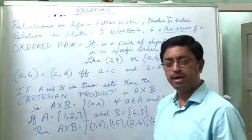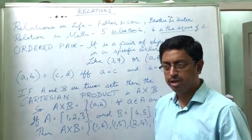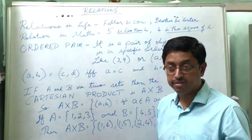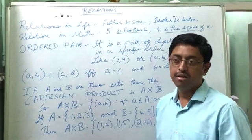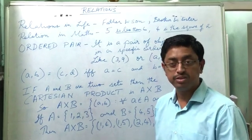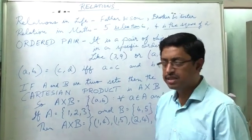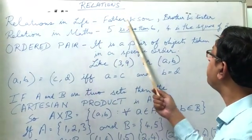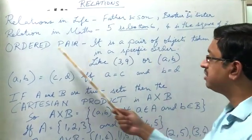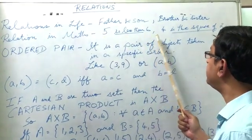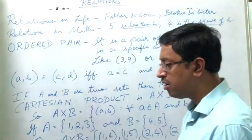Now in mathematics also we have some kind of relations like less than, that is 5 is less than 6, or 4 is the square root of 16. So relations in life are like father and son, brother and sister relation in mathematics. 5 is less than 6, 4 is the square of 2.